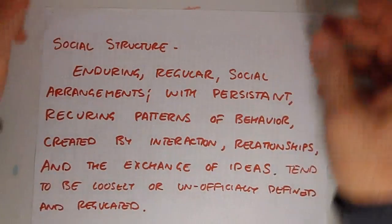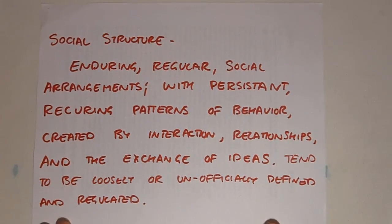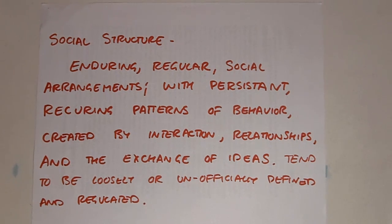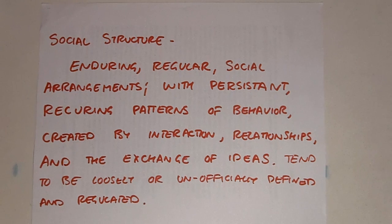To give you a concise definition: social structure is an enduring, regular social arrangement with persistent, recurring patterns of behavior created by interaction, relationship, and the exchange of ideas. They tend to be loosely or unofficially defined and regulated.